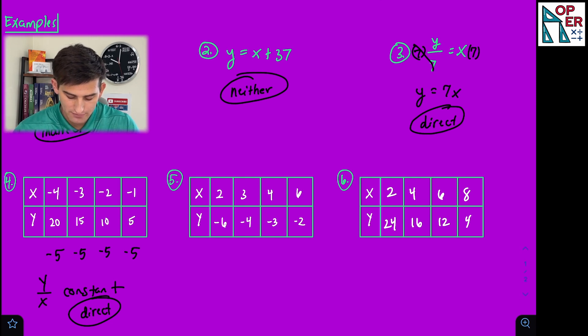Number five. If I looked at y over x again, negative six divided by two would be negative three, but negative four divided by three is not negative three. So we know it's not direct. So let's check for indirect, which would be multiplying y times x this time.